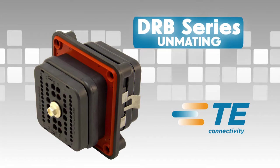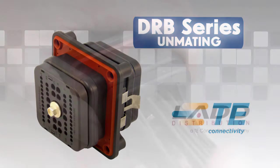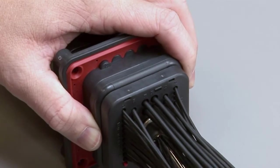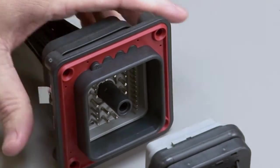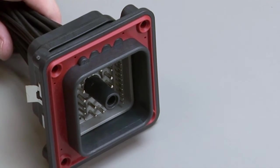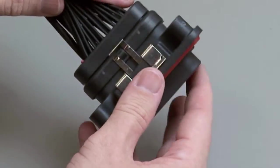DRB unmating. To unmate DRB series connectors, loosen the jack screw and pull the plug and mounting flange assembly apart. Remove the receptacle from the flange by releasing the retaining clips.